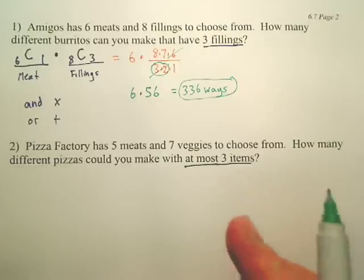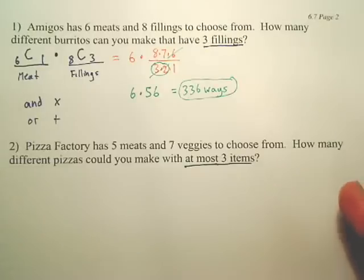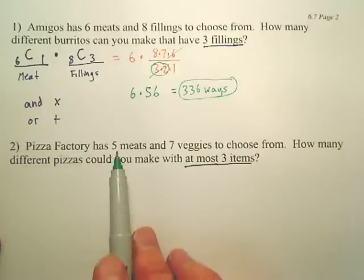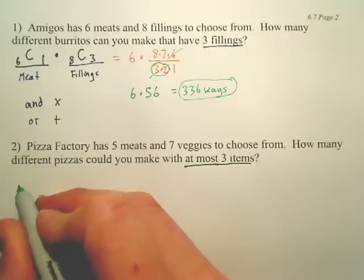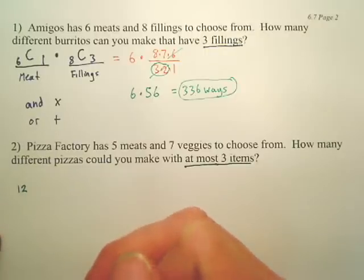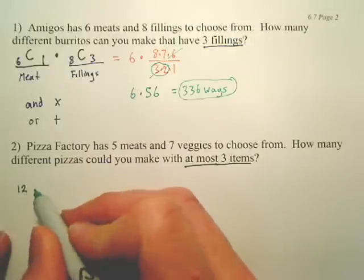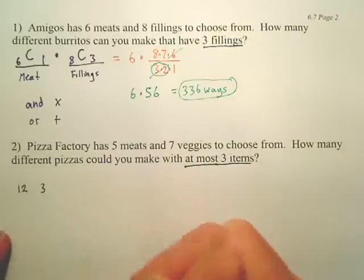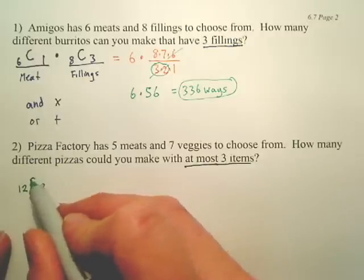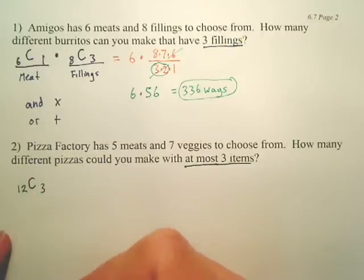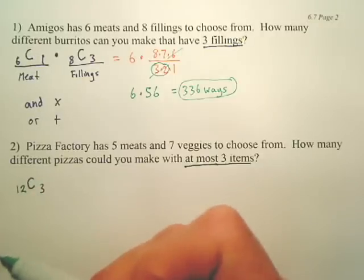We're not going to pay attention to the size of the pizzas — assume a certain size, just talking about different toppings. Can you mix any of these toppings? So technically, how many toppings are there to choose from? Isn't it five plus seven — twelve? So there are actually 12 toppings. For three items, wouldn't it be 12C3? And would that be C or P? C — do you care about the order toppings go on your pizza? No, you just put them on.